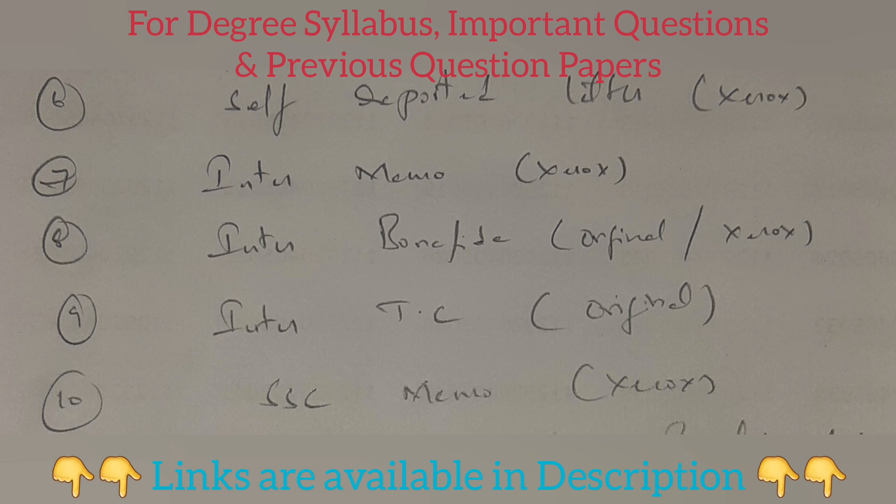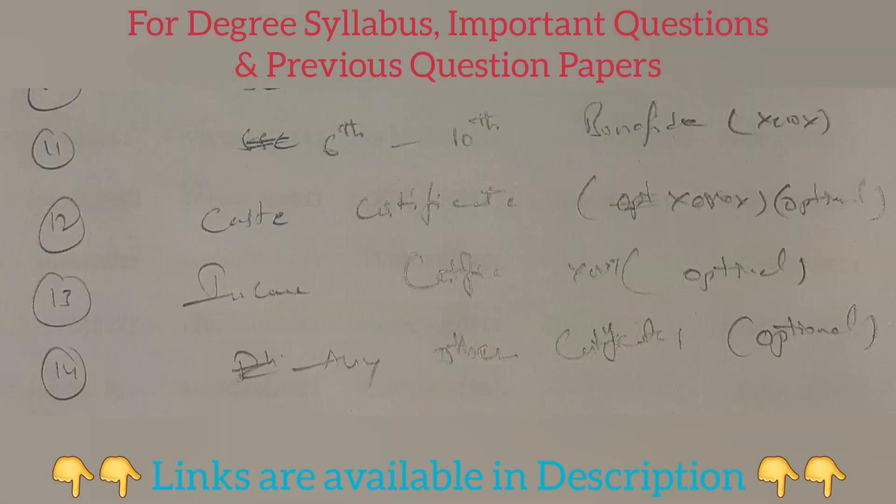Sixth: self-report letter xeroxes. Seventh: inter memo xeroxes. Eighth: inter bona fide — original as well as xeroxes. Ninth: inter TC — original. Tenth: SSC memo xeroxes. Eleventh: sixth class to tenth class bona fide xeroxes.